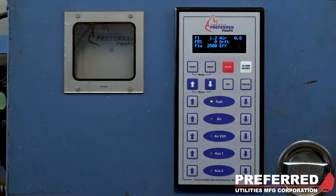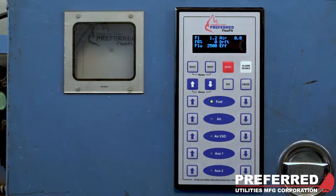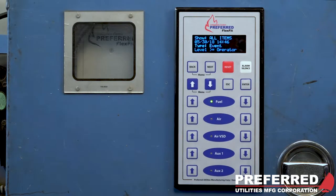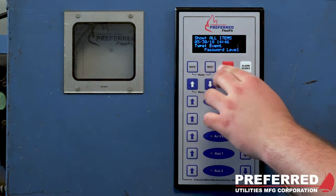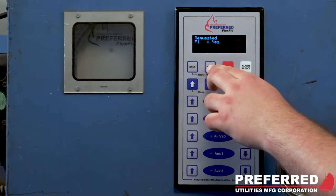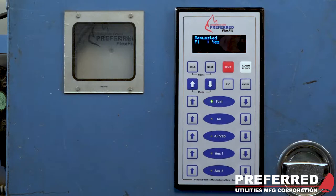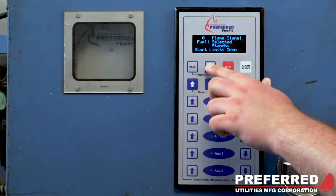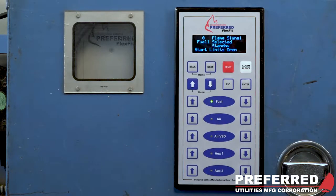You can cycle through to the next screen. This shows just your outputs to your servos as well as still shows your firing rate output. Next shows a history of alarms and events. The next one shows you which fuel is requested. Right now we have it set up for only one fuel. And the last screen shows your current flame signal, which fuel is selected. It shows that you're in standby with all of your start limits open.